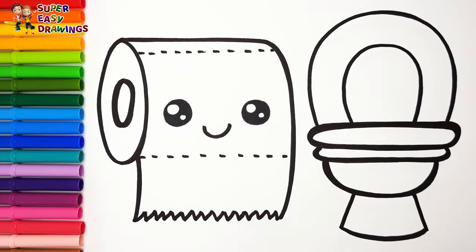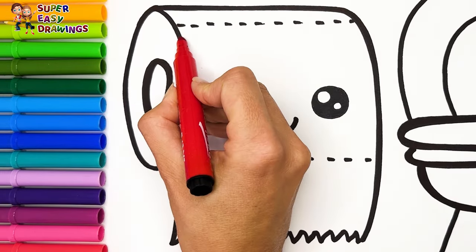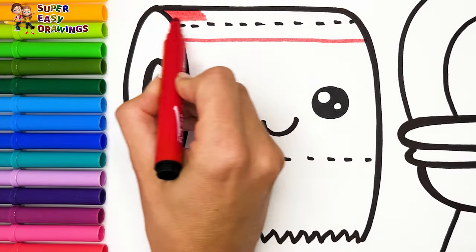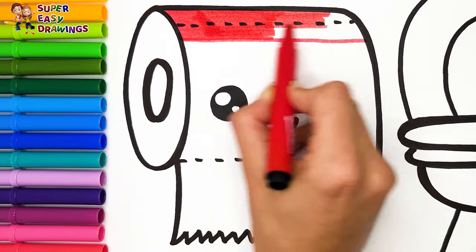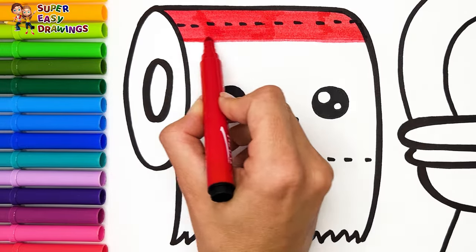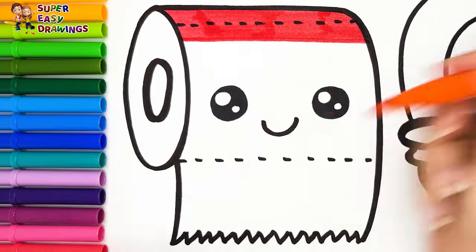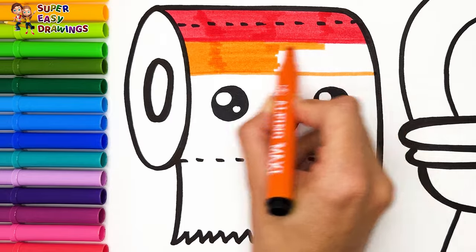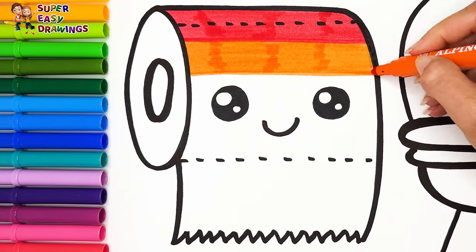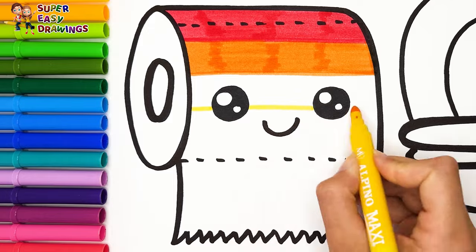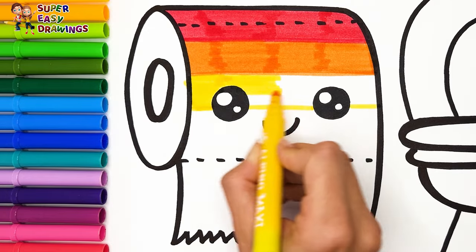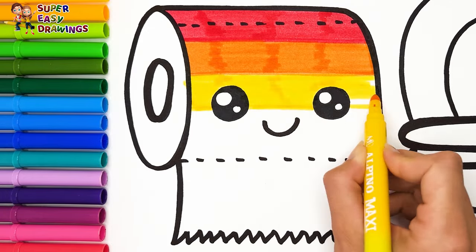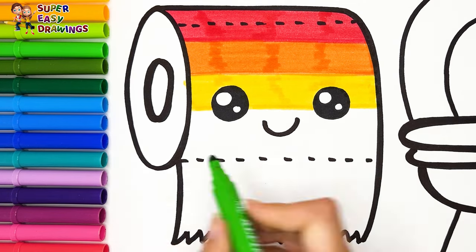Let's start coloring. Color our cute toilet paper. I'm going to use rainbow colors. I start with red, then I use orange, yellow, green.